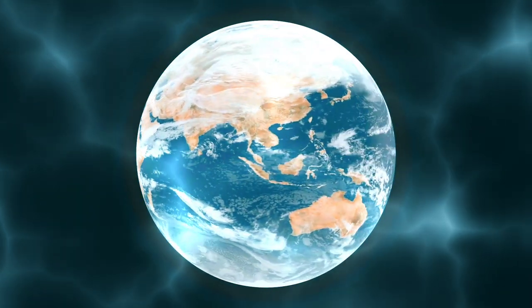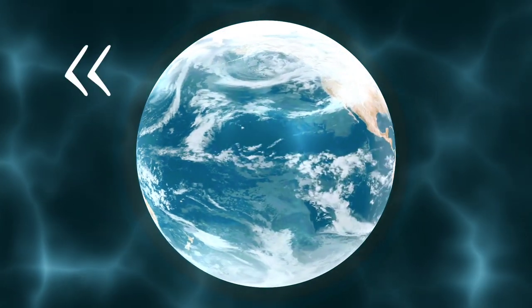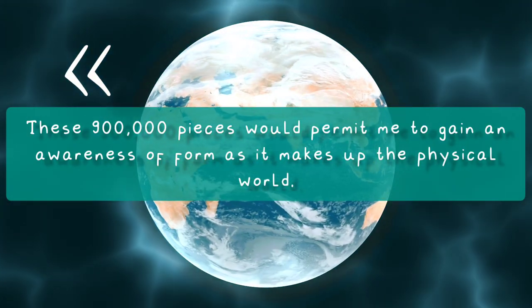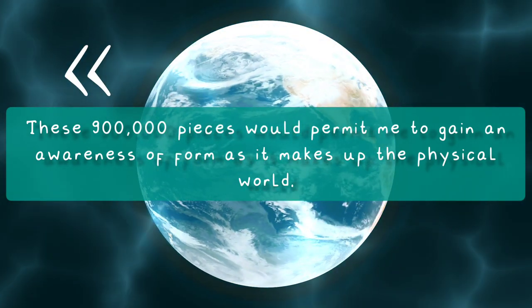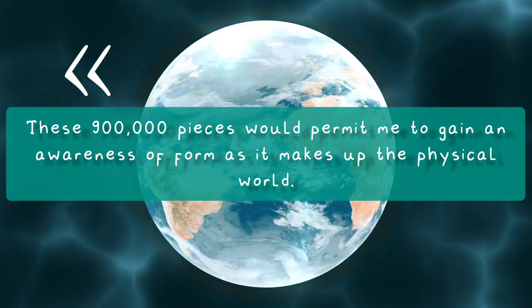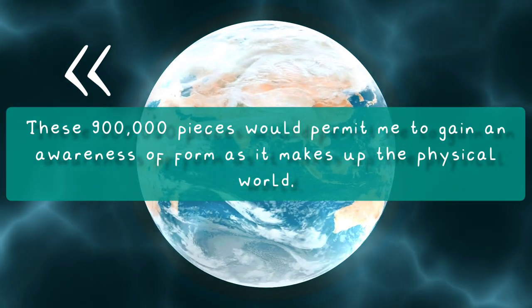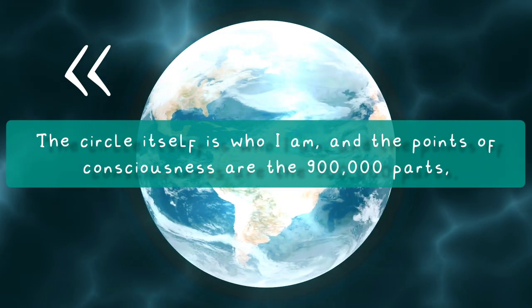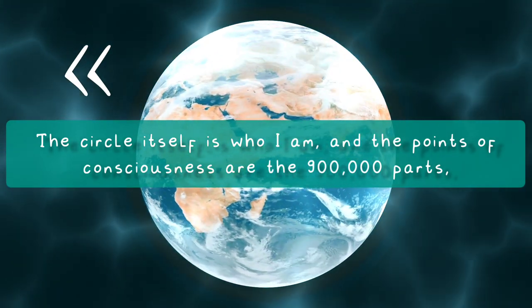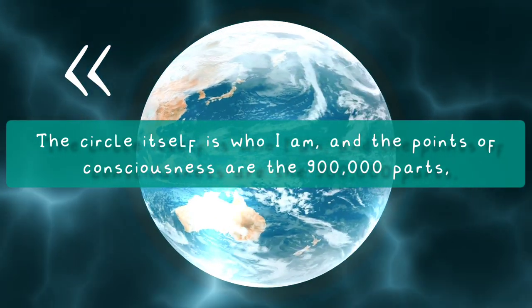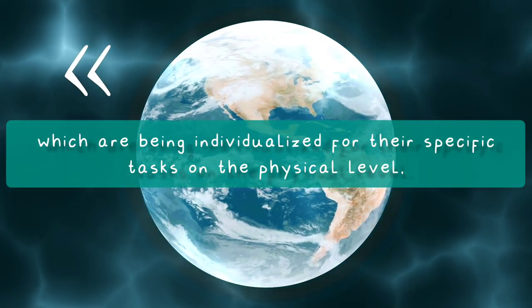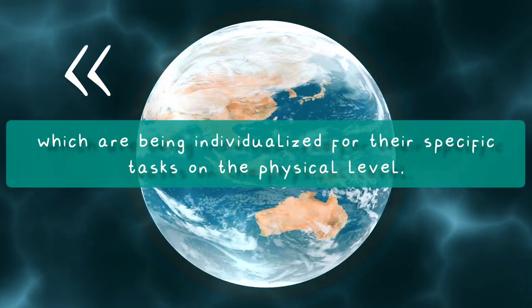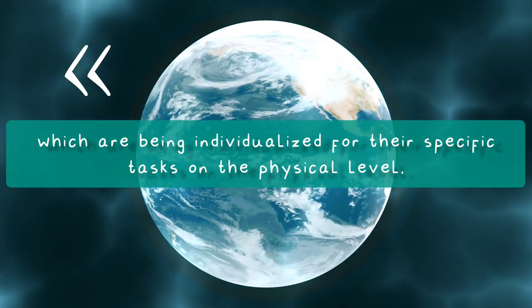He further explains, quote, these 900,000 pieces would permit me to gain an awareness, a form, as it makes up the physical world. The circle itself is who I am, and the points of consciousness are the 900,000 parts which are being individualized for their specific tasks on the physical level, end of quote.